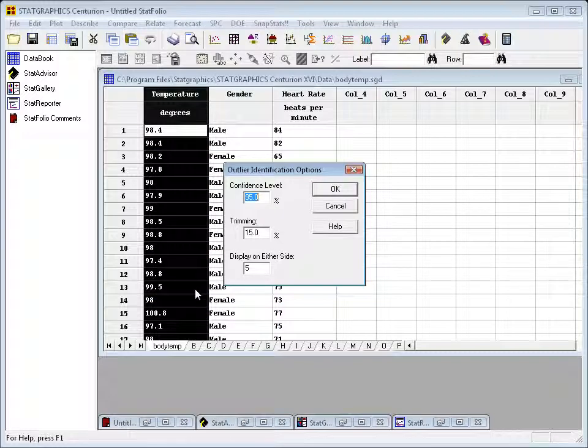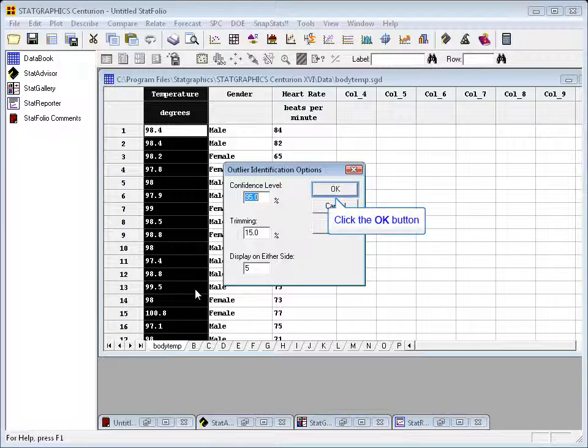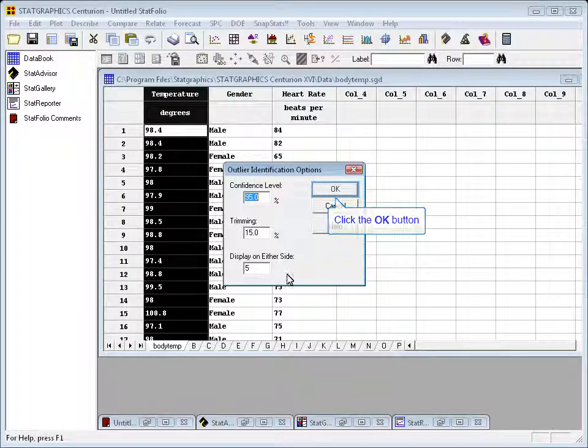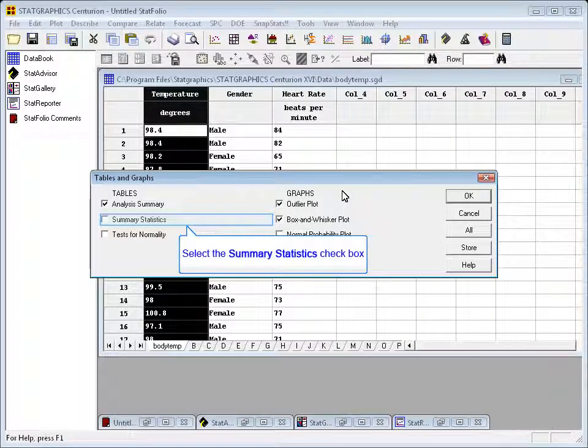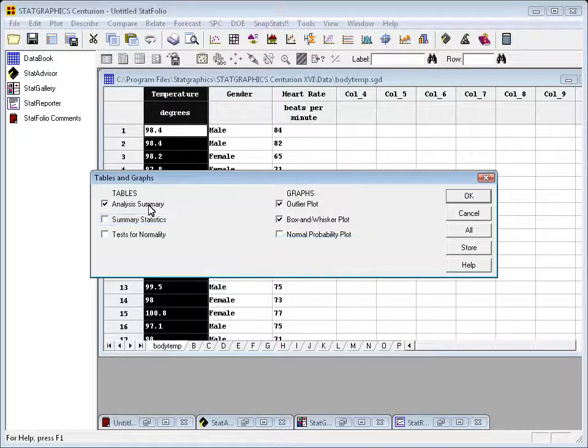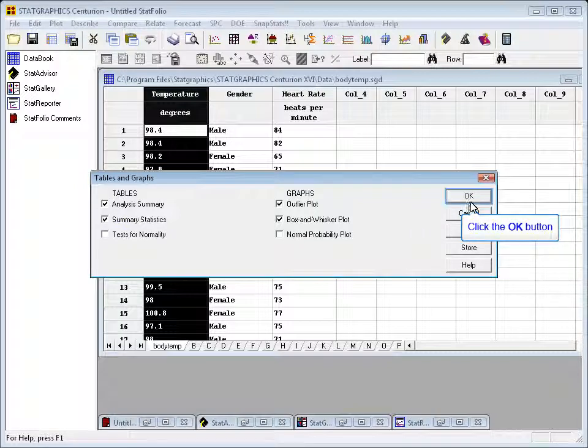This procedure begins with a data input dialog box, where I can select the column of interest, in this case Temperature, and put it in the data field. We'll then see a dialog box with several options for this outlier identification procedure. A good rule in StatGraphics, if you're not sure what options to pick, just go ahead and press the OK button. The tables and graphs which will come up by default will be an analysis summary, and on the graphics side, both an outlier plot and a box and whisker plot. I think I'll add one more table, summary statistics, and then press OK.